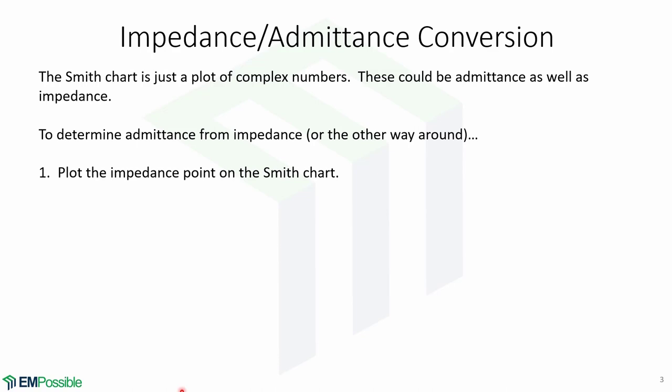Remember that the Smith chart is just a plot of complex numbers. These numbers can be admittance as well as impedance. To determine admittance from impedance, or the other way around, we follow these steps.